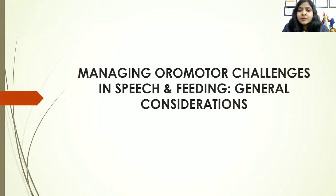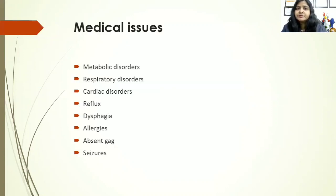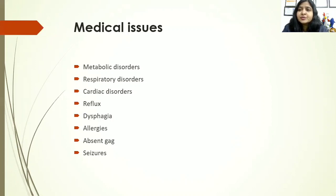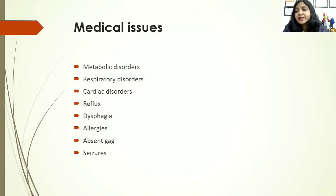What are the general considerations when we talk of oral motor challenges? First and foremost, we need to look into medical issues — metabolic disorders, respiratory disorders, cardiac disorders — because any medical issue will directly affect the oral musculature and the ability of the child to speak or eat. Especially when it comes to reflux, children having reflux will have feeding issues. Kids having dysphagia will have very clear feeding issues. Kids with respiratory disorders will see frequent infections affecting speech and feeding.